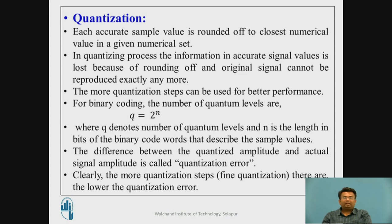In quantization, each sampled value is rounded off to the closest numerical value in a given numerical set. In the quantizing process, information in the accurate signal value is lost because of rounding off, and the original signal cannot be reproduced exactly. More quantization steps can be used for better performance. For binary coding, the number of quantum levels is defined as Q = 2^N, where Q denotes the number of quantum levels and N is the bit length of the binary word describing the sample values.